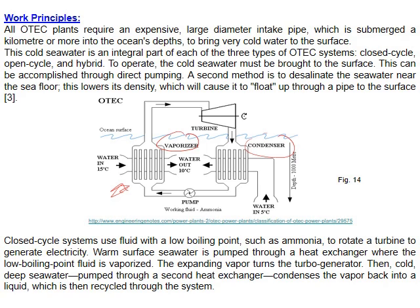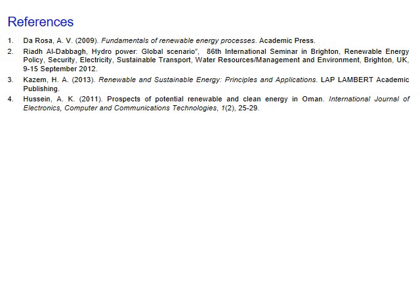A heat exchanger uses a low-boiling-point working fluid. Warm surface water evaporates the fluid, which expands to rotate a turbo-generator and produce electricity. Cold water pumped from the ocean depths then condenses the fluid back to liquid, which is pumped again to repeat the cycle. More details will be covered in the next session.